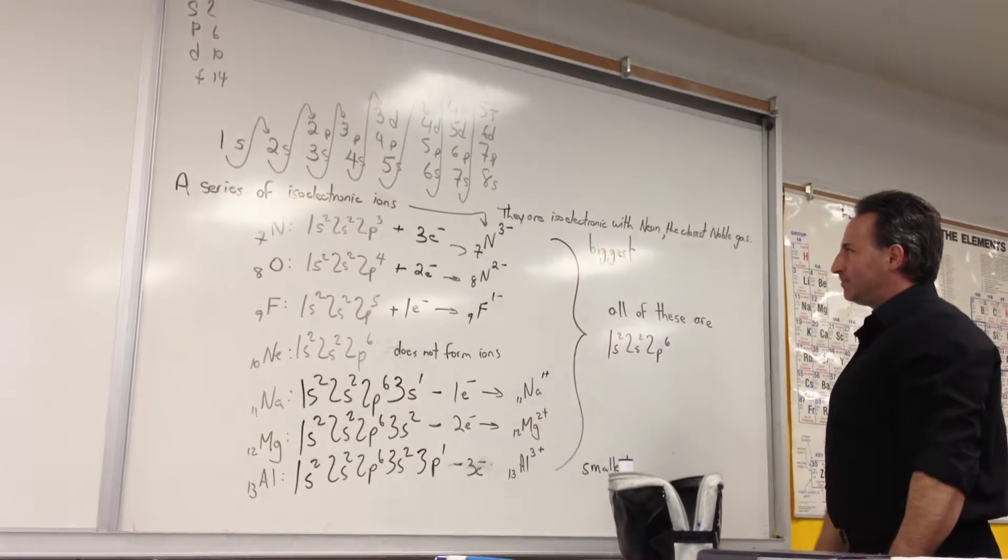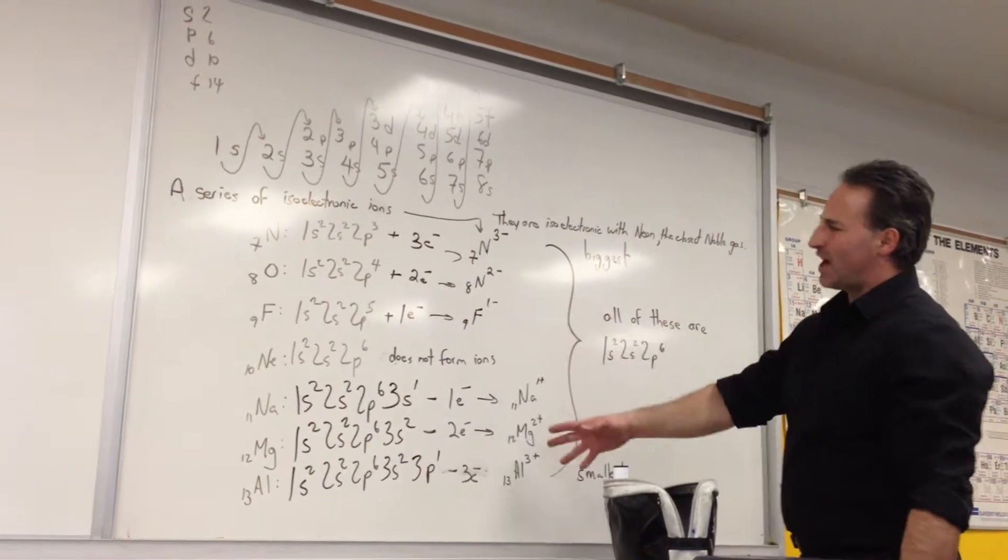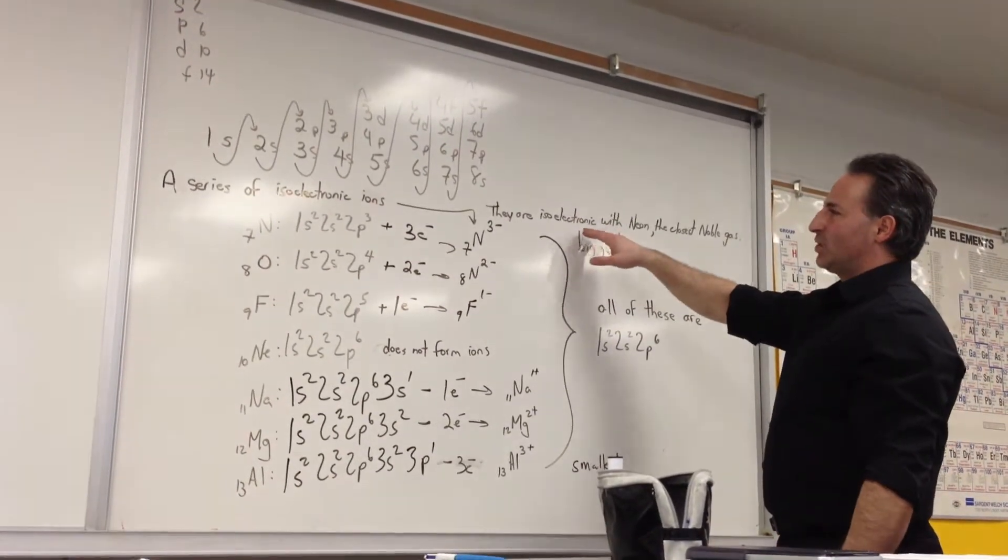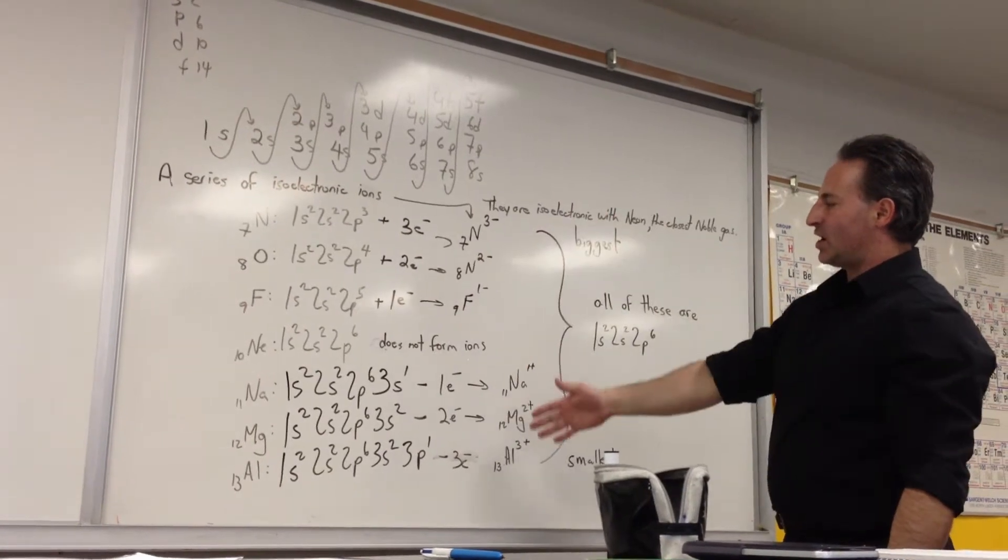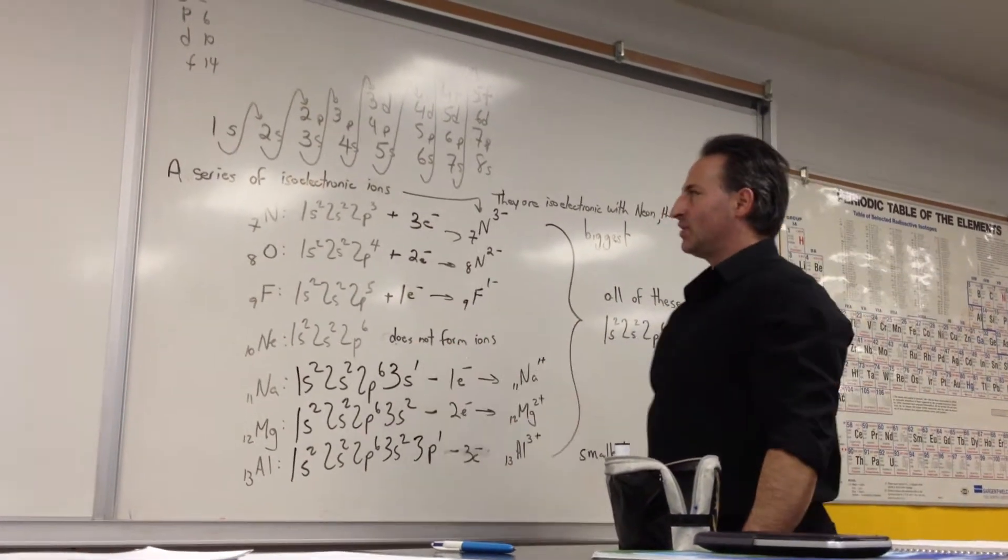And we might add, and when this happens, by the way, it's called being isoelectronic. All these ions are isoelectronic with the configuration of neon.